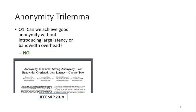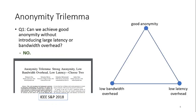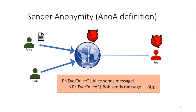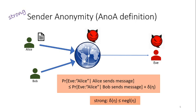Before going into the specific results, let's define each of the terms more formally. We define sender anonymity using the ANWA framework. It is an indistinguishability-based anonymity definition where the evil recipient Eve receives a message from Alice or Bob and tries to determine who sent the message. We want that the probability Eve guesses correctly is less than the probability she guesses wrongly with some slack delta. If delta is negligible in the security parameter eta, we call it strong sender anonymity.